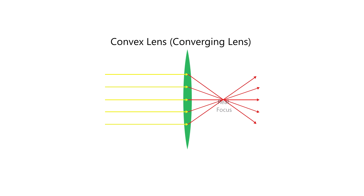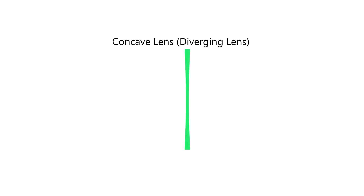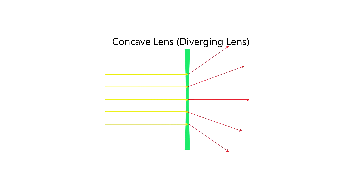The second type is called the concave lens. A concave lens is thicker at the edges and thinner at the center. It is also called a diverging lens because when parallel light rays pass through it, the refracted rays diverge or spread out. We have to extend the refracted rays in order for them to meet at a point called the virtual focus.